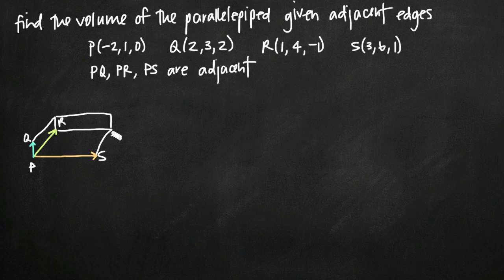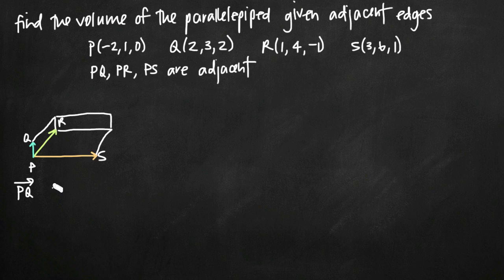We can use the scalar triple product to find the volume. The way that we model them as vectors — to find, for example, the vector PQ — we just take point Q and subtract each of the corresponding components from point P. So the new vector PQ is going to be equal to: we take the x component from Q, which is 2, and subtract the x component from P, so minus negative 2.